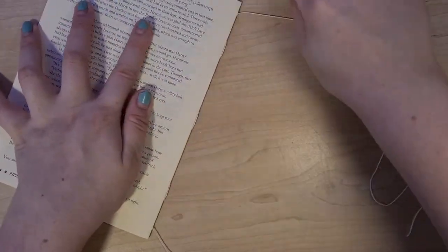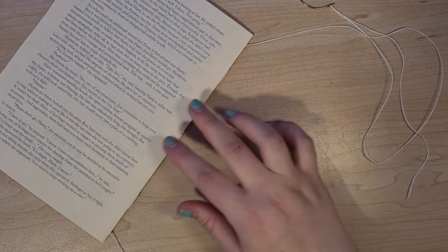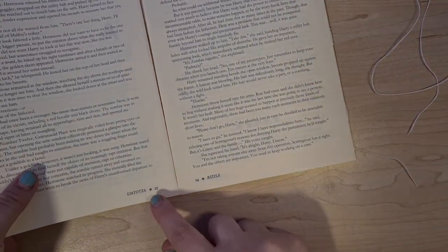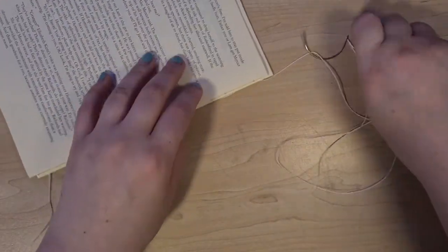Once you've done the first signature I like to press it down with my bone folder to make sure the end result is flat and even. When getting the next signature I make sure that the page numbers match up so everything is correct and in place, and then I pop it on top of the first signature.